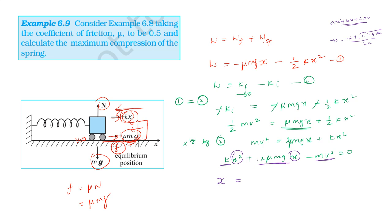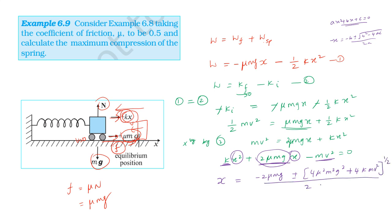For maximum compression x, we get x equals: minus 2 mu Mg plus or minus root of 4 mu squared M squared G squared minus 4ac, divided by 2A. Substituting values with mu equals 0.5, mass equals 1000 kg, and other given values to get the final answer.